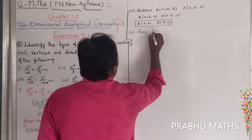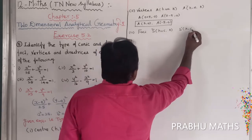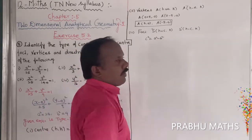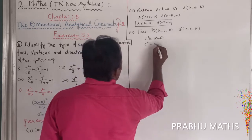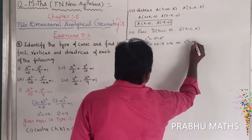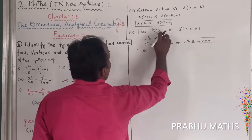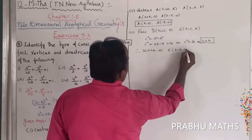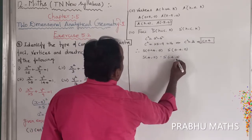Next, to find the foci. Focus S = (h + c, k) and S' = (h − c, k). The formula is c squared equals a squared minus b squared. So c squared equals 25 minus 9 equals 16, which implies c equals 4. Therefore, S = (0 + 4, 0) = (4, 0) and S' = (0 − 4, 0) = (−4, 0). The foci are completed.